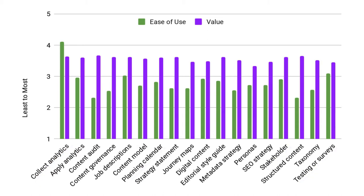It also meant that while content audits, for example, were seen as highly valuable, only 48% of respondents reported doing them because they're not that easy to complete. Similarly, only 29% reported modeling content, and just 23% had developed a metadata strategy.